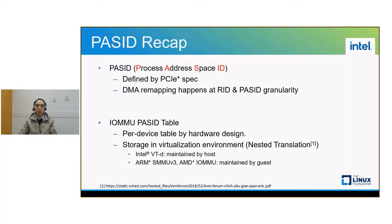This difference results in different ways to set up IOMMU-assisted translation for guests. One is to bind the guest PASID to host one by one. Another is to bind the whole guest PASID table to host.